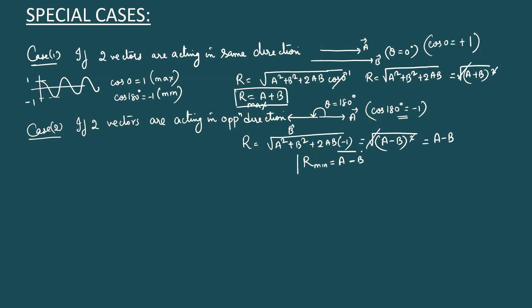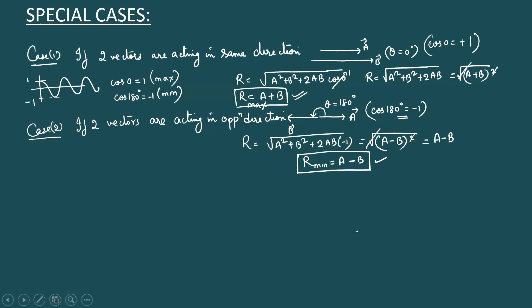So if two vectors are acting in opposite directions, just subtract them; if they are acting in the same direction, just add them. A+B is the maximum possible resultant, and A−B is the least possible resultant.